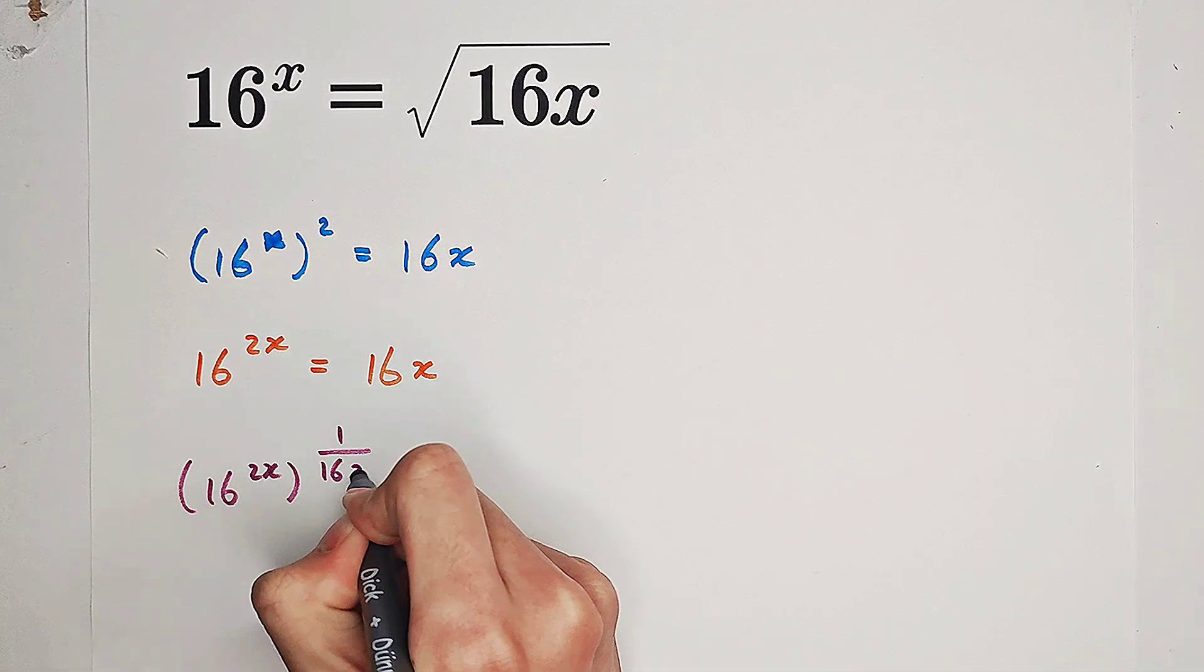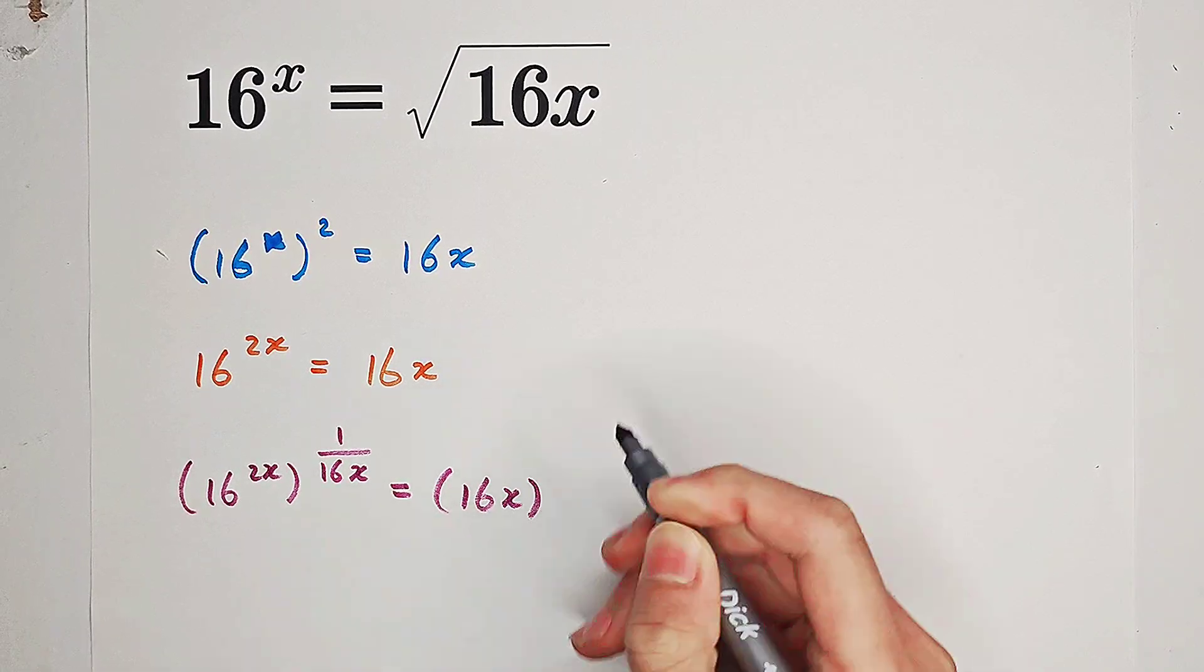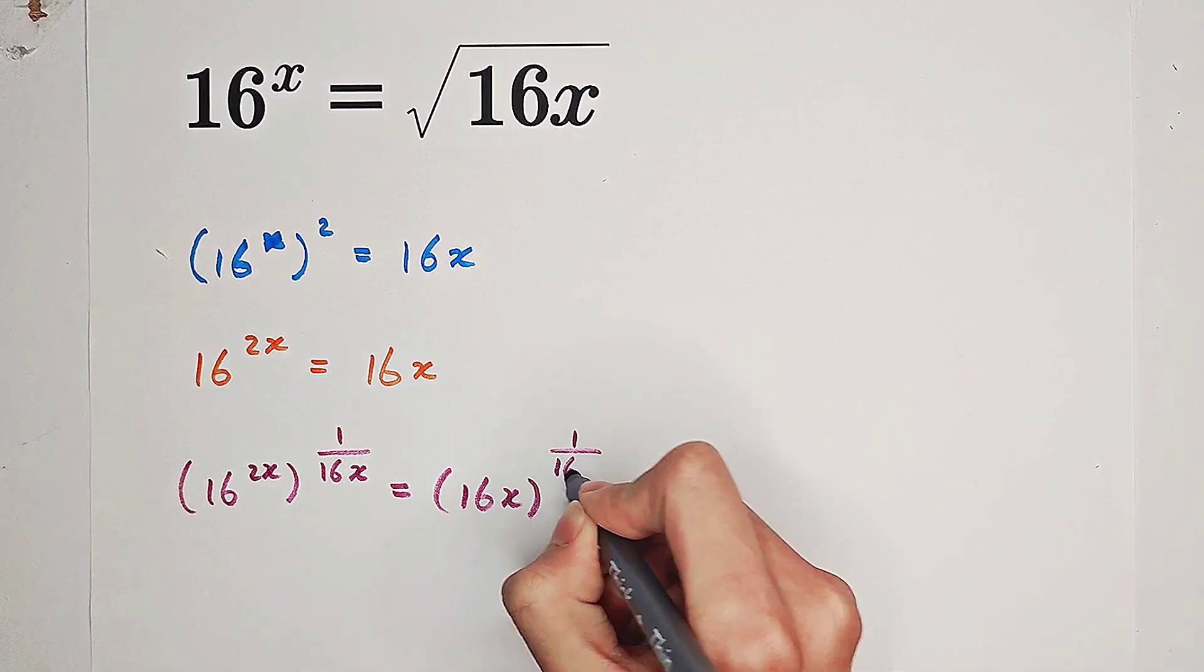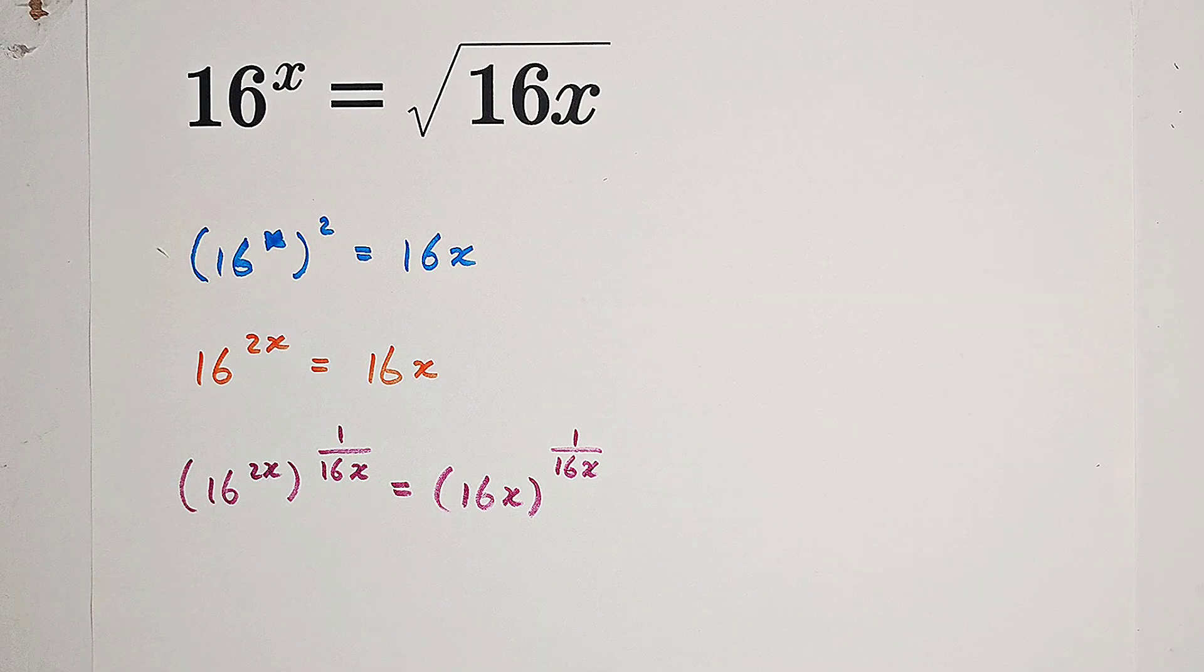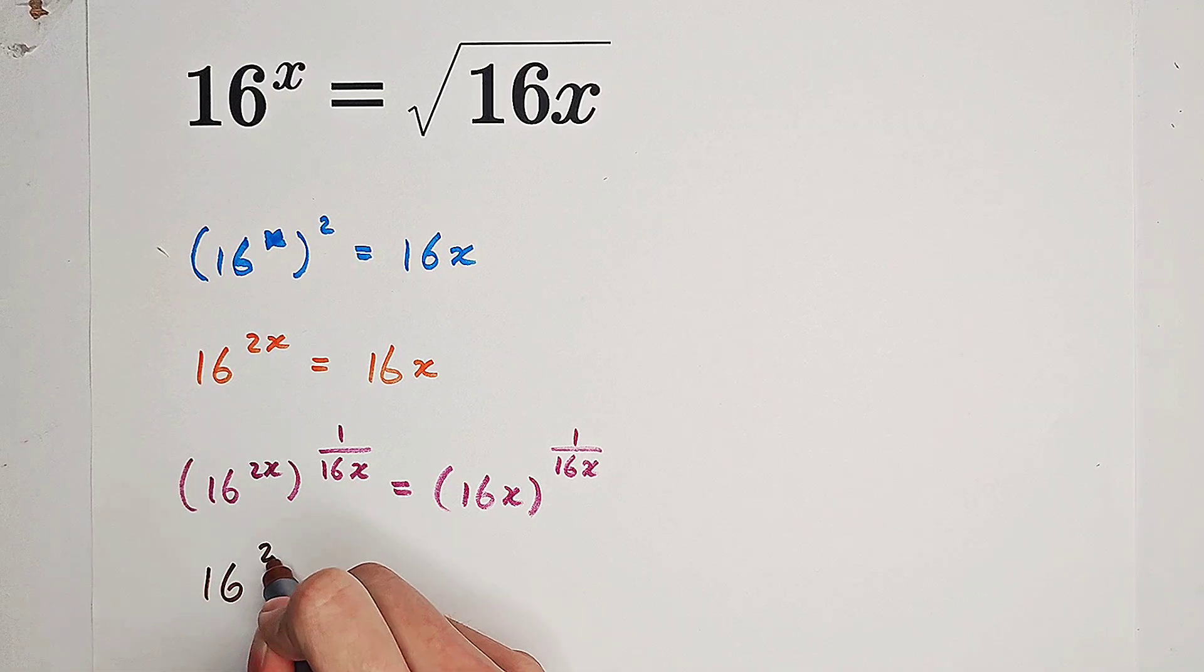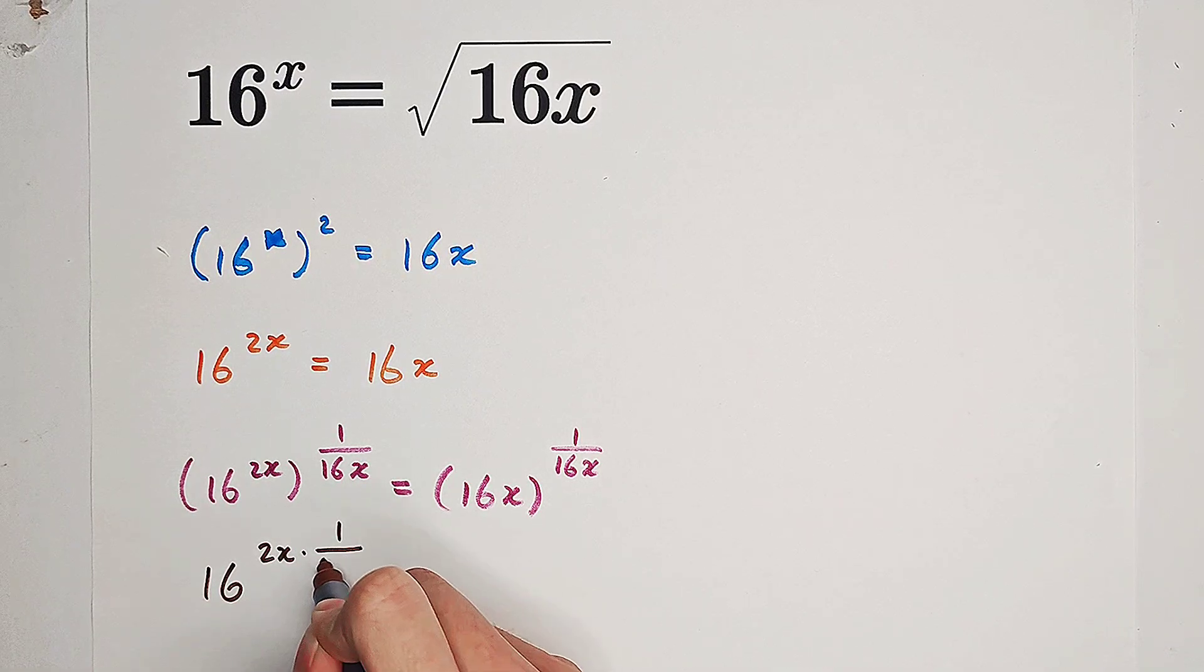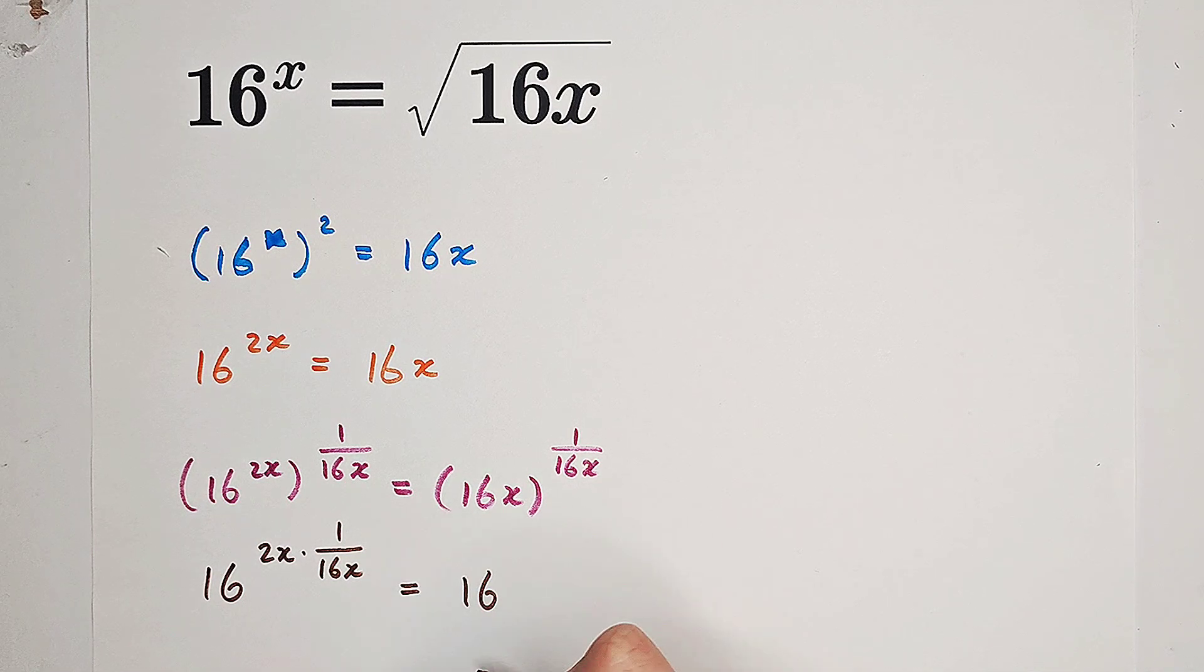Then you can see we get this. The right side will have the form something to the power of itself. What about the left side? You see it is equal to 16 to the power of 2x times 1 over 16 times x, which is equal to 16 to the power of 1 over 8.